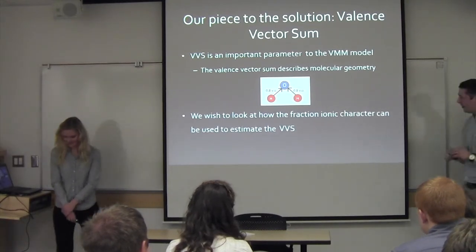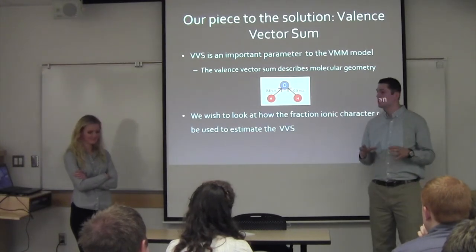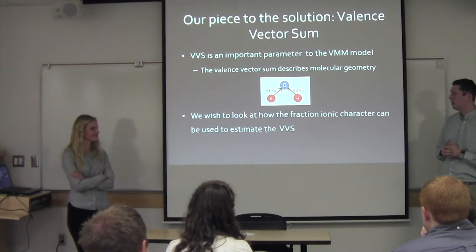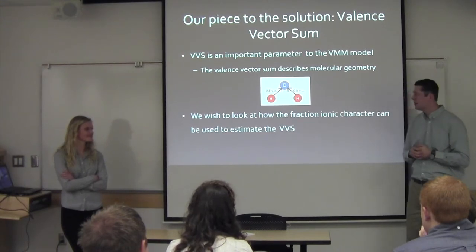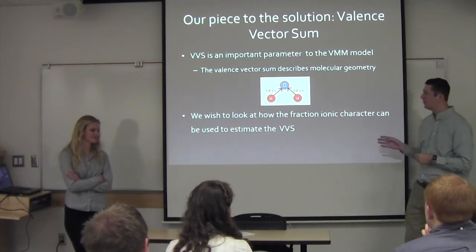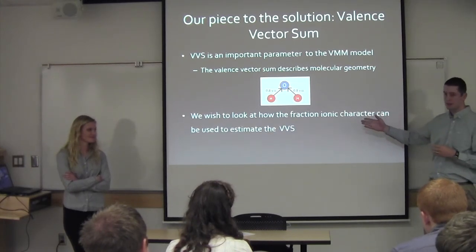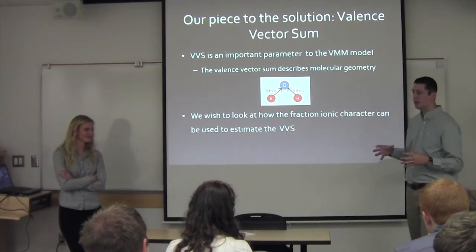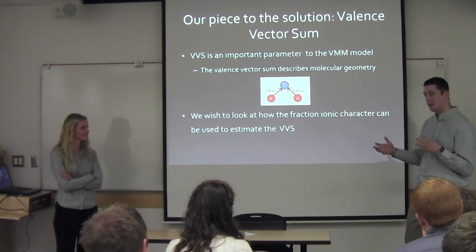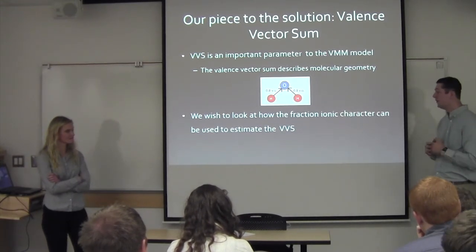We're going to talk a little about the valence vector sum. It's really important in the valence multiple model because it explains the geometry of the molecule really well. For example, using the water molecule with two hydrogens and oxygen, these arrows represent the valence units. According to Pauling's second rule, they are incident to the central atom. The valence vector sum of this molecule would be 1.6 valence units, which gives us an indication of the geometry of a molecule.